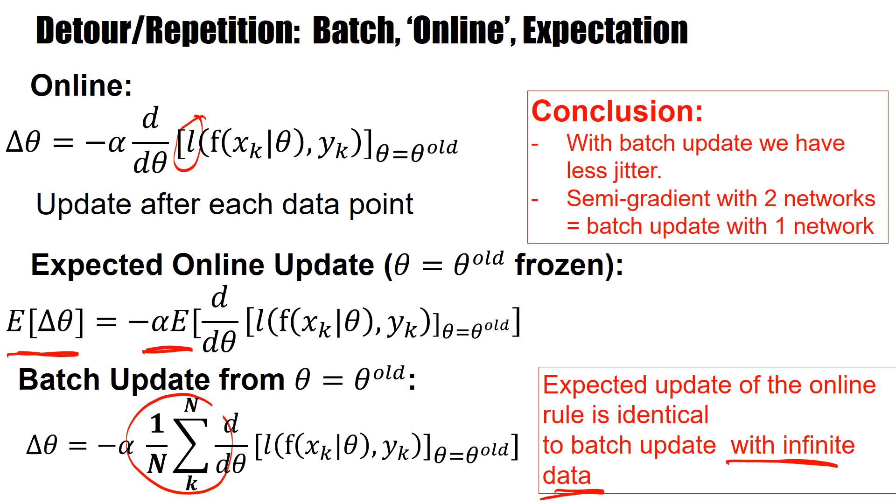Now in our case, this loss function is the online loss function of TD learning. And we have to create a batch. And the semi-gradient network with two networks implements a batch update with one network where this one network is the slow network.